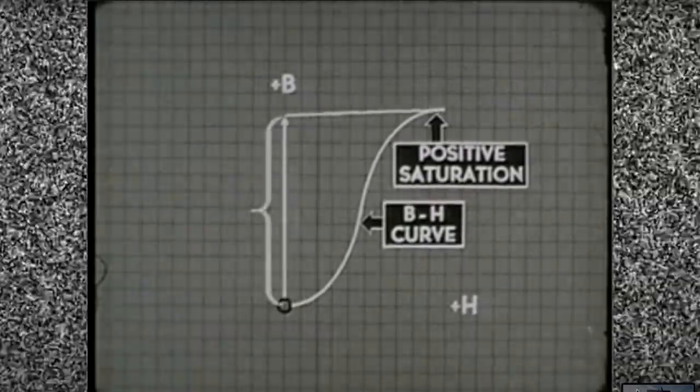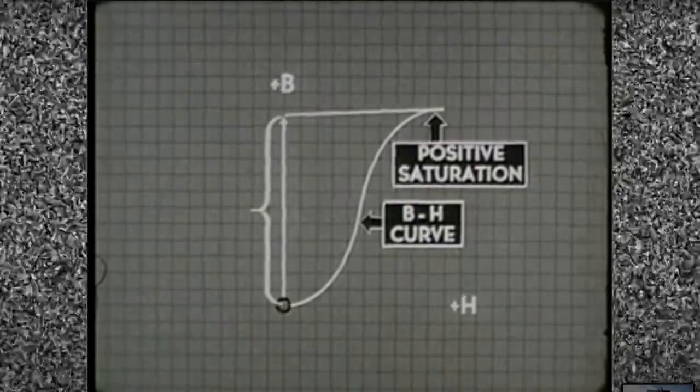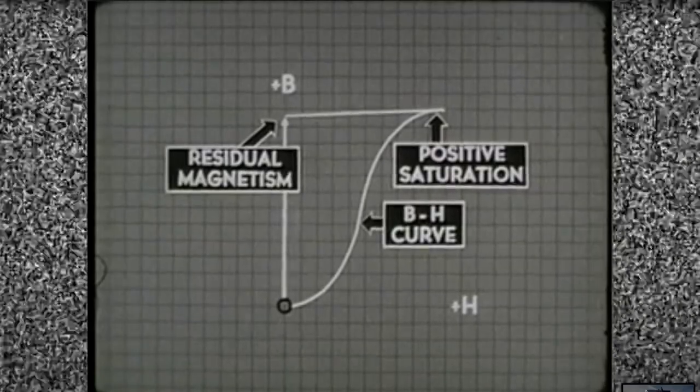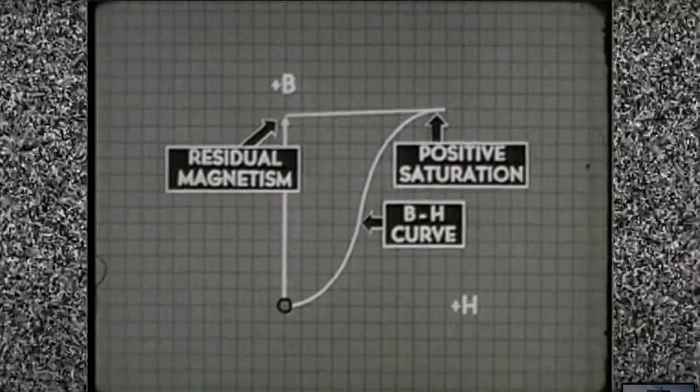It's negligible. This, then, is the amount of remaining magnetism. This amount is known as the residual magnetism of the core material. The magnetism that remains after the force that brought it about is removed.